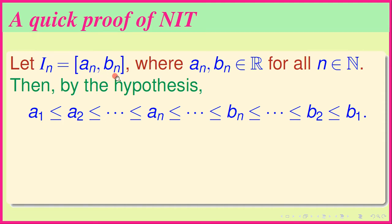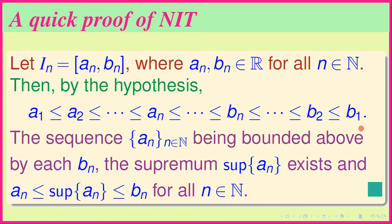Since [a_1, b_1] contains [a_2, b_2], we have a_1 ≤ a_2. In this way, a_1 ≤ a_2 ≤ ... ≤ a_n ≤ ... ≤ b_n ≤ ... ≤ b_2 ≤ b_1. The sequence a_1, a_2, a_3, ..., a_n, ... is bounded above by each b_n, so the supremum sup{a_n} exists.